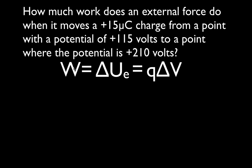We can calculate both of these — they're equal to each other — by multiplying the amount of charge and the potential difference through which that charge is moved. The only thing here is we're not given the change in potential directly. We are given that it's moved from a point with plus 115 to a point where it's plus 210, but we're not given the change in potential explicitly.